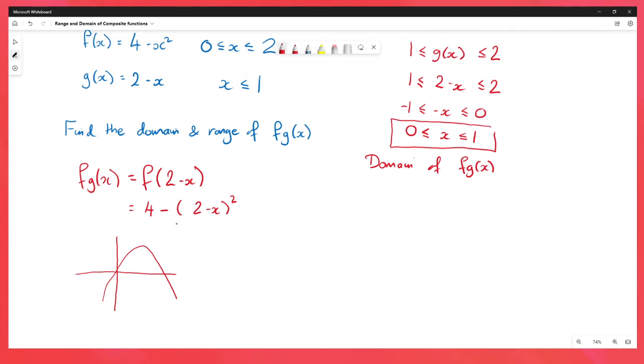It's going to go through the y-axis because when x is 0, we get 4 minus 4, so it's 0. And then we just need to think about x between 0 and 1. So we've got 0 and 1 there. Here, when x is 1, we can calculate y, 4 minus 2 minus 1 all squared is 3.